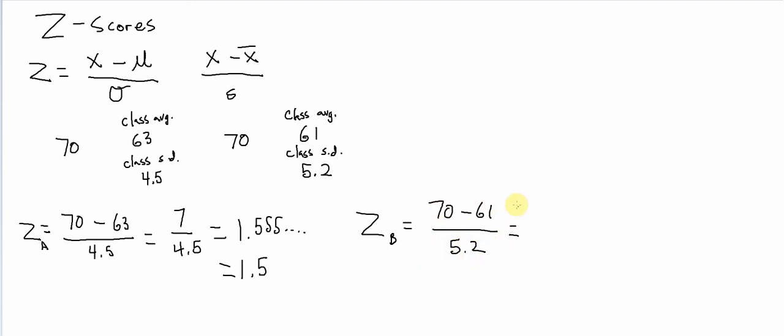So 70 minus 61 is 9, divided by 5.2. So 9 divided by 5.2 is 1.7307. But again, 1.7 is bigger than 1.5. So student B, their score is higher, is more standard deviations above the mean than student A's. So we would say their relative standing is higher.